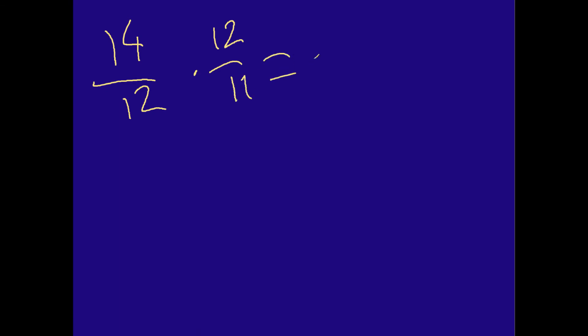So we got 14 over 12 multiplied by 12 over 11. Now, what do we do here? Well, 14 times 12, do some basic math here. That comes out to about 168, and 12 times 11, that comes out to 132. So we're almost done with our final answer.